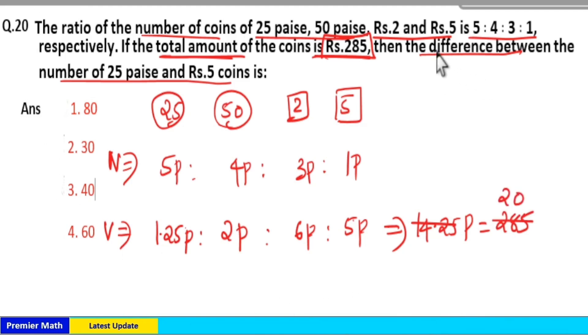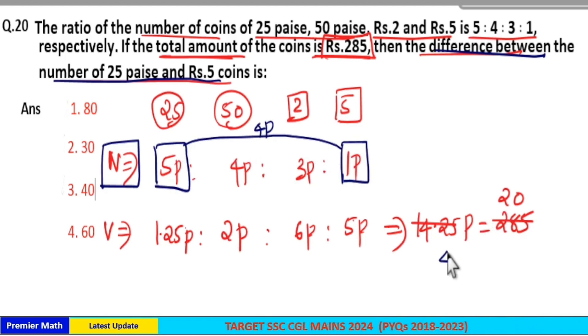Then we need difference between number of 25 paise and rupees 5 coin, which is equal to 5 part minus 1 part, which is 4 part. So 1 part = 20 means 4 part = 4 × 20 = 80. So difference is equal to 80 coins. Option 1 is your answer.